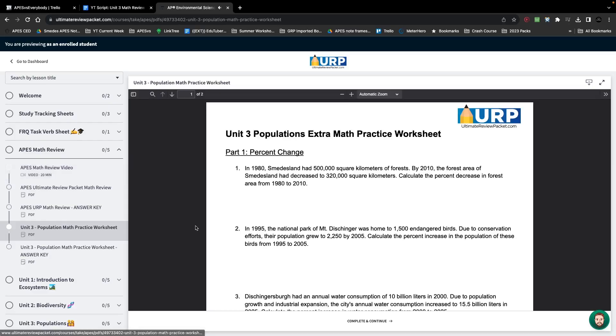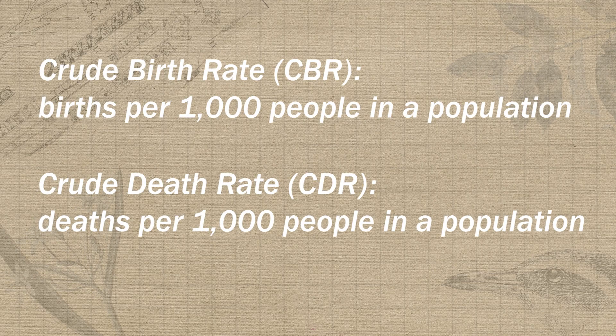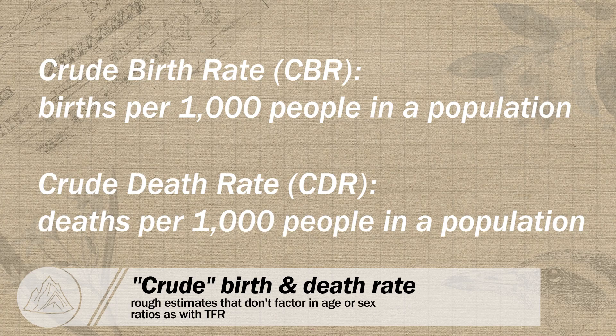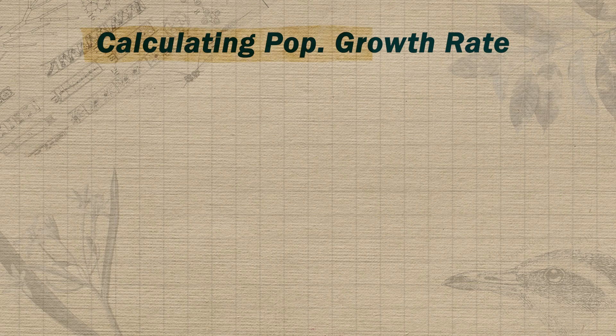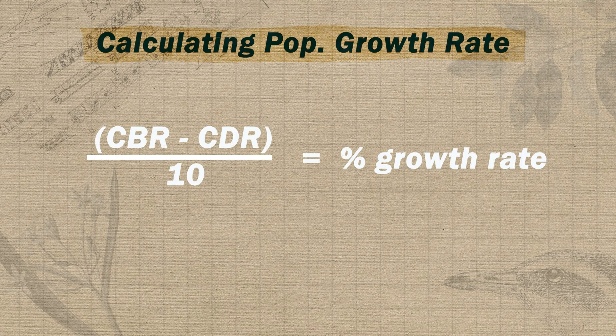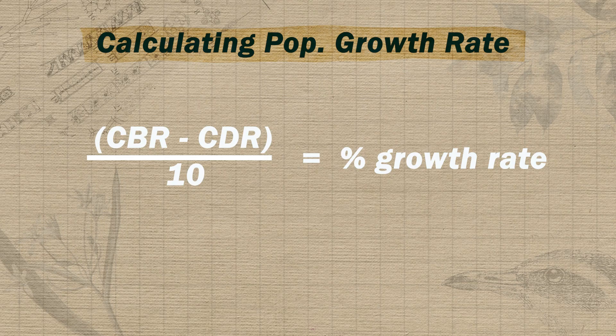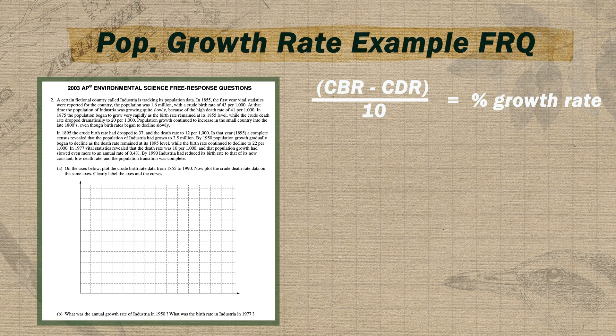The second type of problem you need to be able to do in unit three is calculating the percent population growth rate using crude birth rate and crude death rate. Crude birth rate and death rate refer to an estimate of the number of births and deaths per 1,000 people in a population. We call them crude because they're rough estimates that don't factor in sex ratios or age distribution the way total fertility rate does. The equation for calculating the percent growth rate for a population is just CBR minus CDR, all over 10. Births add to a population and deaths take away from it — and you can remember that birth comes before death. We divide by 10 because crude rates are expressed as per 1,000, while percent means per 100.